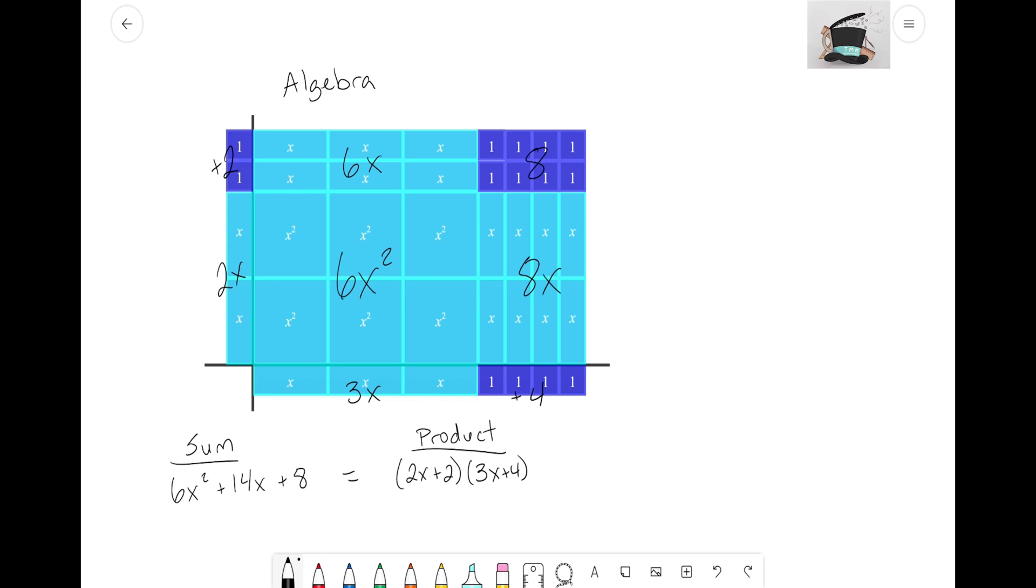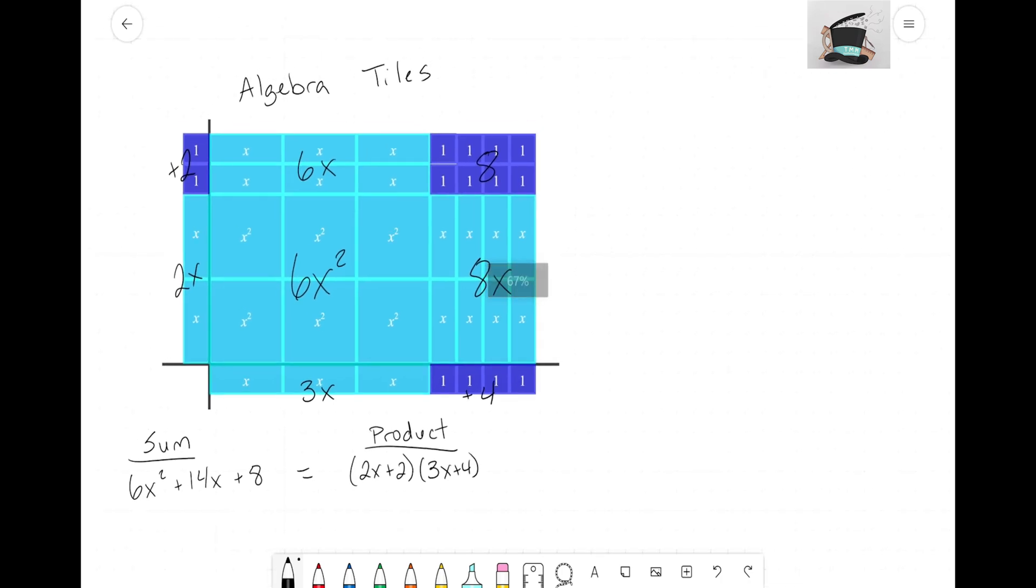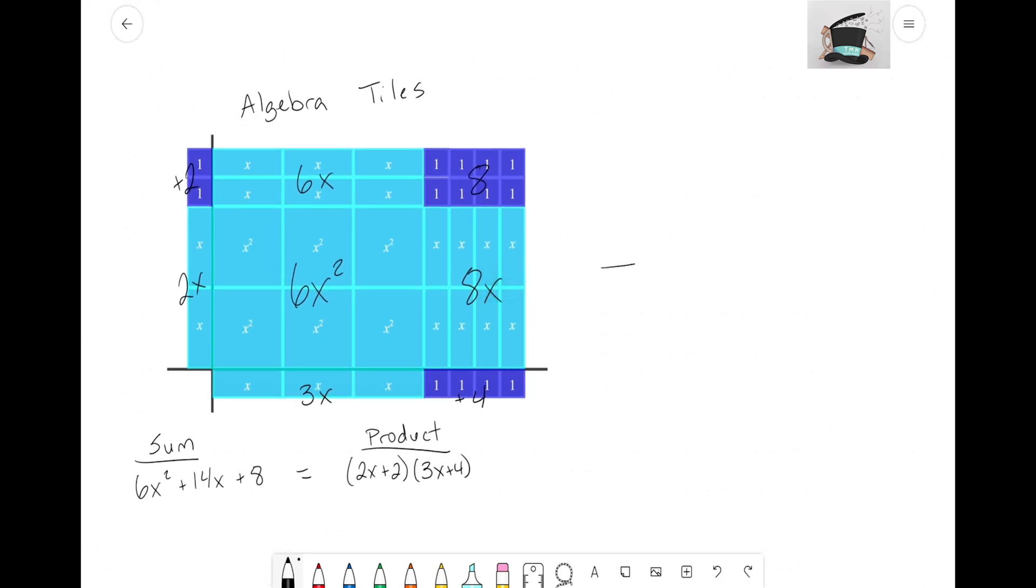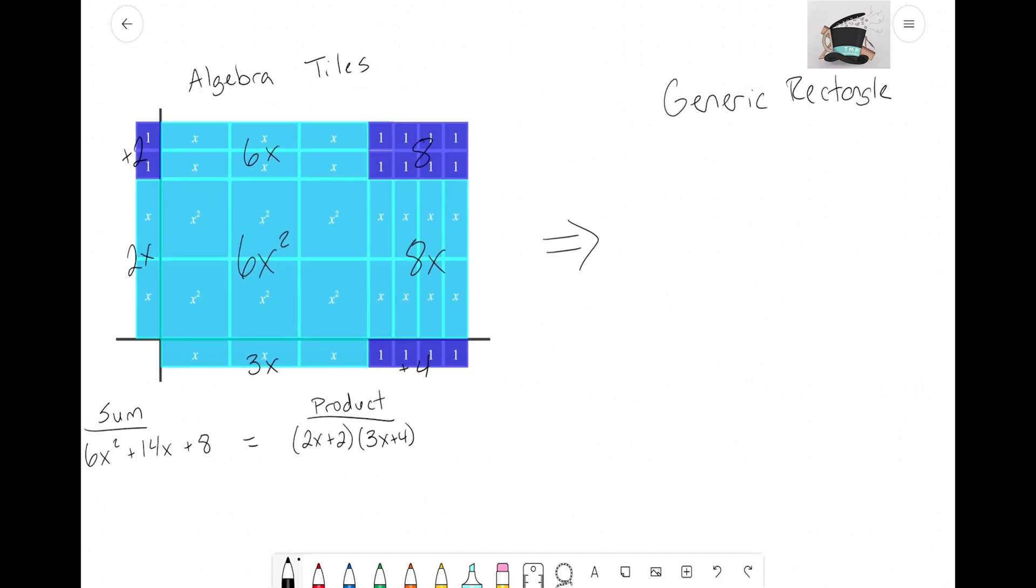So we can see this is how we were first using this, and our hope is that we'll be able to transition to something we call a generic rectangle. A generic rectangle is literally made up of the algebra tiles, but now we're not actually going to physically use those tiles. So let me show you what I mean.